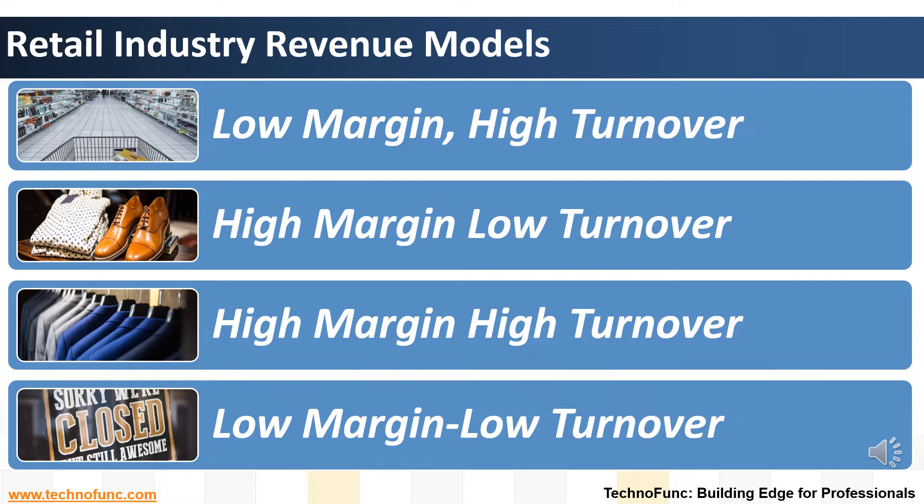We will now discuss four types of revenue models adopted by players of the retail industry. First is low complexity, low margin, high turnover. Second is high margin, low turnover. Third is high margin, high turnover. And the last is low margin, low turnover.